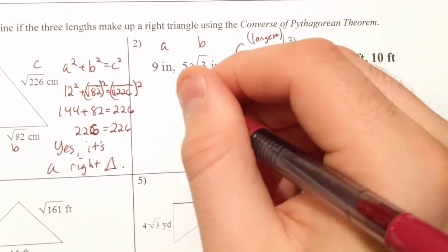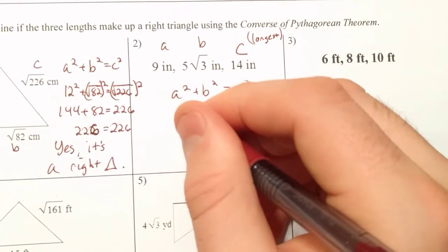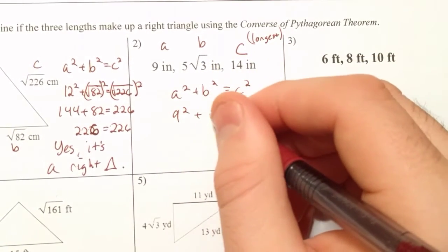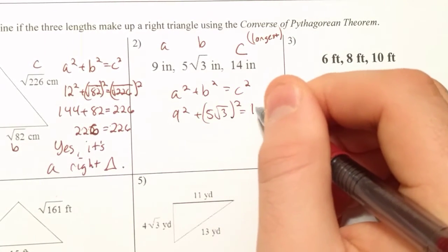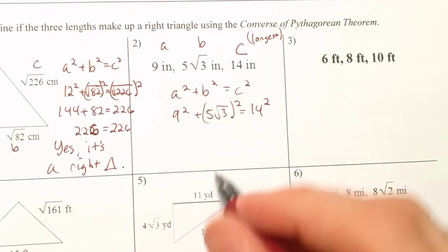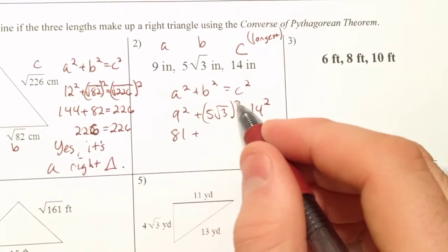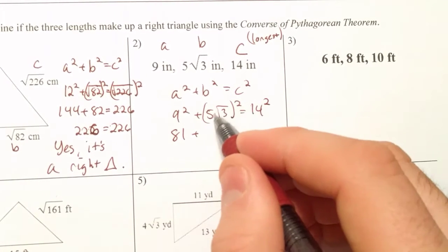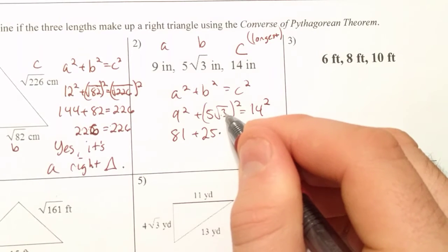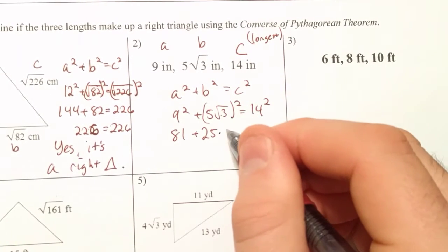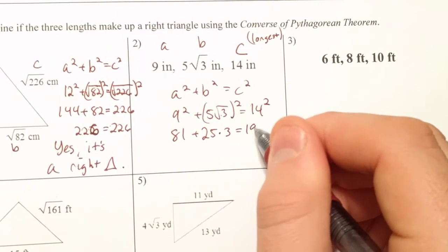So we're going to do A squared plus B squared equals C squared. It's going to be 9 squared plus 5 root 3 squared equals 14 squared. 9 squared is 81. Here you're going to do 5 squared and root 3 squared. So 5 squared is 25. Root 3 squared is going to be just 3.